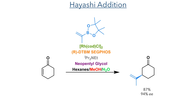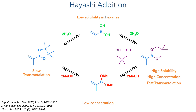In addition to the boronate and rhodium catalyst, it also utilises a chiral ligand, an amine base, neopentylglycol, and a solvent mix of hexanes, methanol, and water, all of which are essential. The solvent mixture is required to drive the formation of the neopentylboronate from the pinacol boronate starting material, as the pinacol boronate undergoes transmetallation quite slowly. This solvent mixture sets up an equilibrium between the pinacol boronate, the boronic acid (which has low solubility in hexane), a dimethylboronate (present only in low concentrations), and the desired neopentylboronate, which is highly soluble, present in high concentration, and reacts rapidly in a transmetallation.